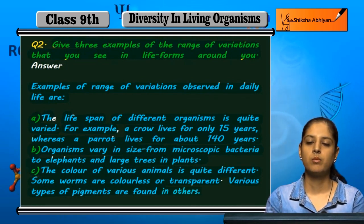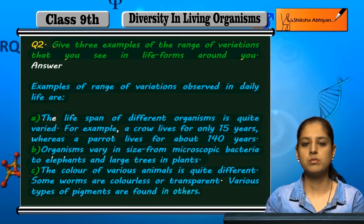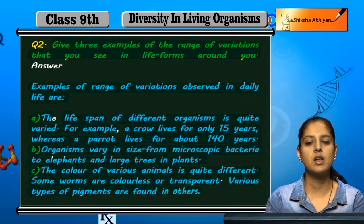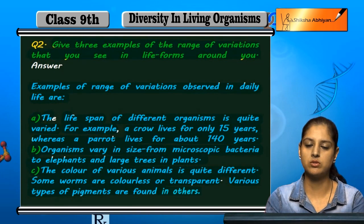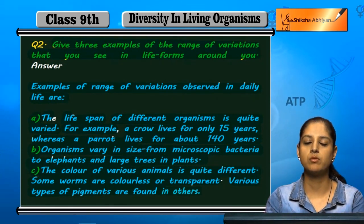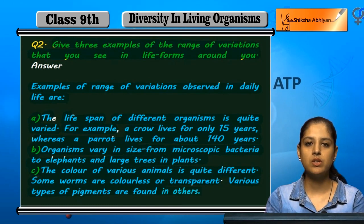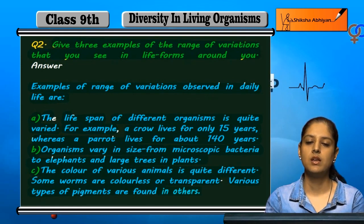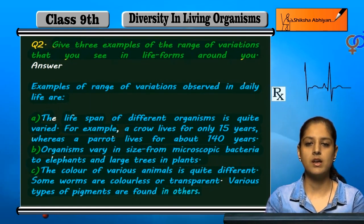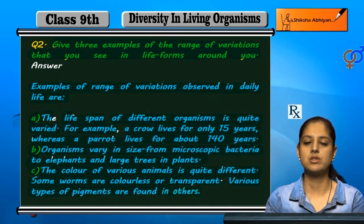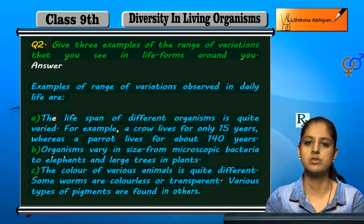So these are three examples of the variations of lifeforms. One is: the lifespan is different. The size is different. The color is different. These are just three examples of the many variations which occur in lifeforms.